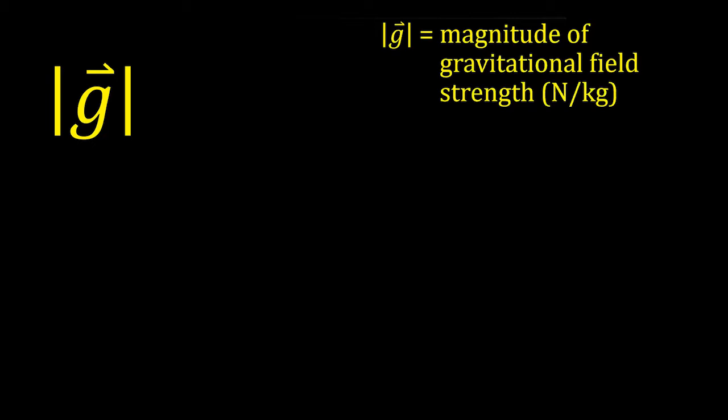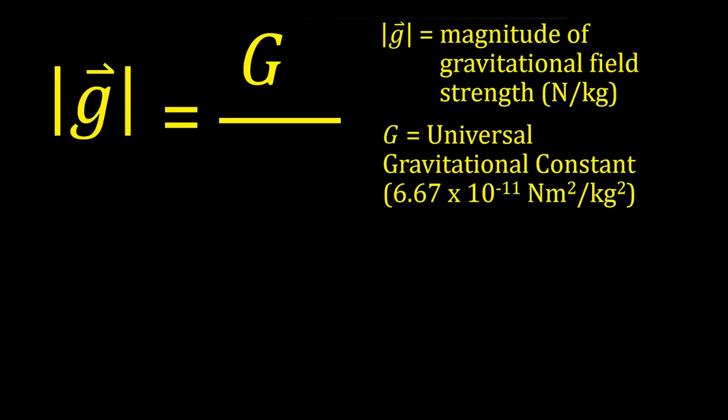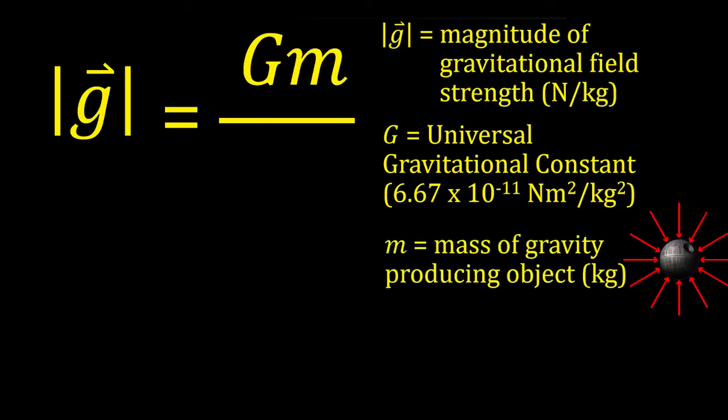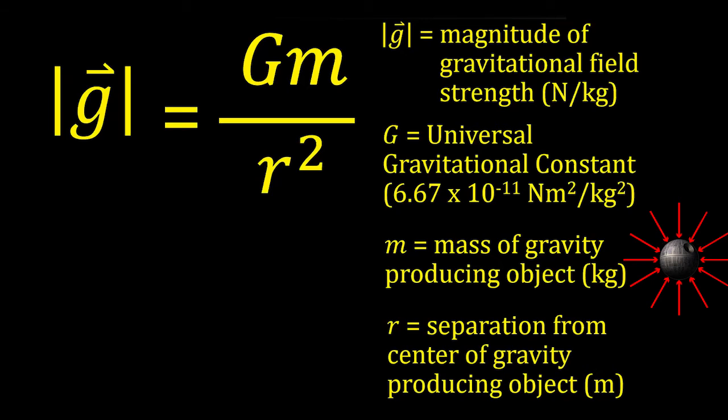We're going to calculate that gravitational field strength by multiplying together two numbers. We're going to start off by multiplying the universal gravitational constant. That's capital G. It's the same everywhere in the universe and for every problem you ever work on it will be 6.67 times 10 to the negative 11 newton meters squared per kilogram squared. That unit is a total mouthful. We're going to multiply that by m which is mass in kilograms of the object producing the gravity. So in our example that would be like the death star. Then we're going to divide all of it by r squared. R is the separation from the center of the gravity producing object to wherever you're at feeling this gravitational field.